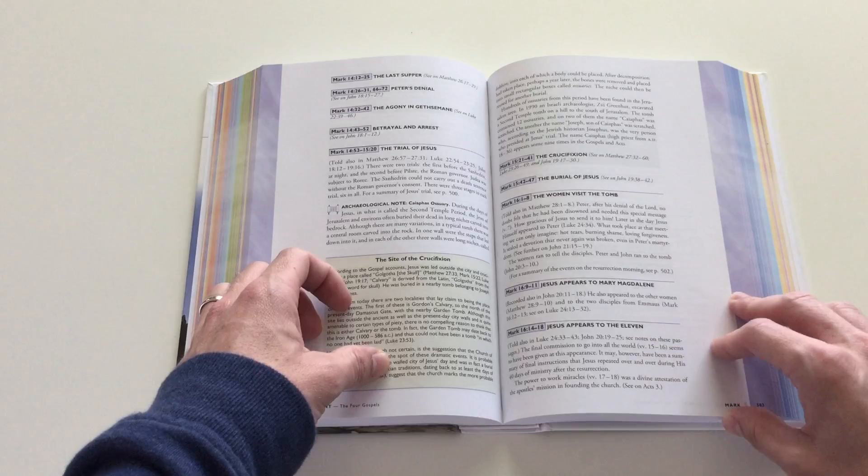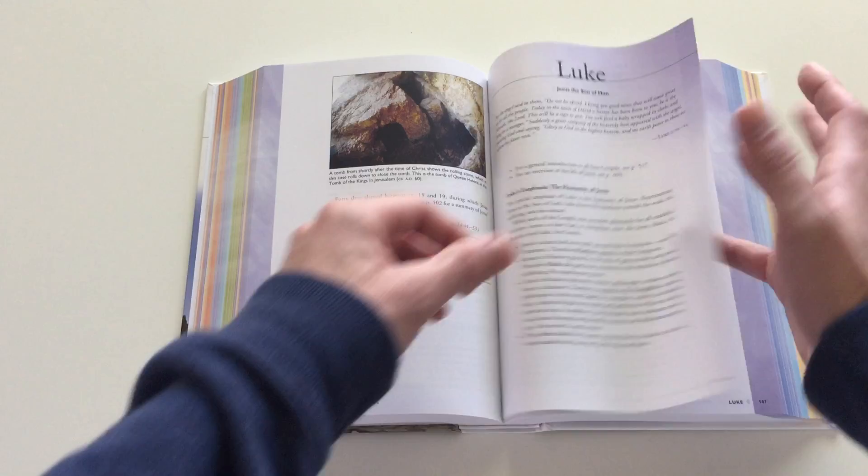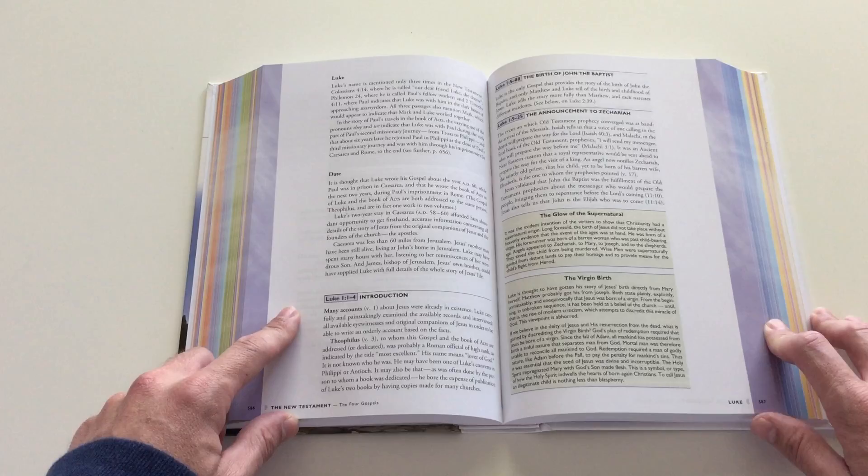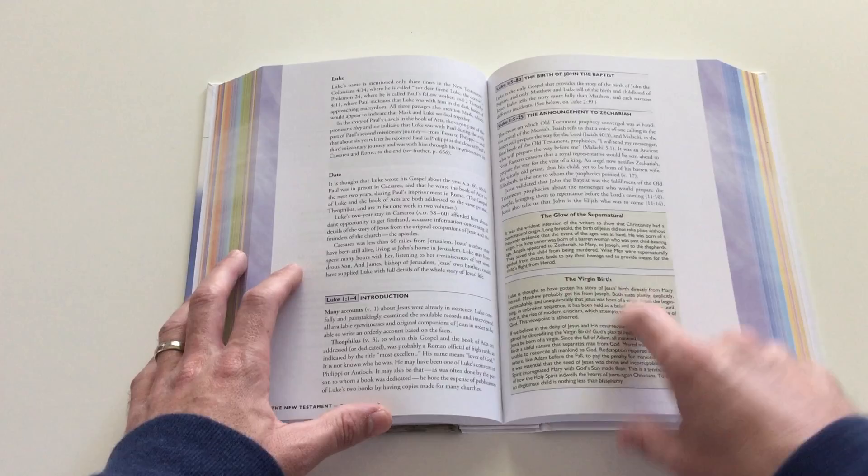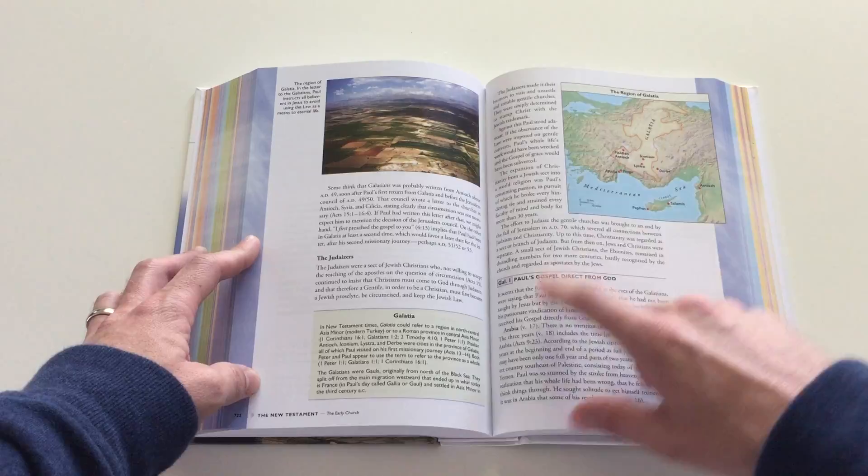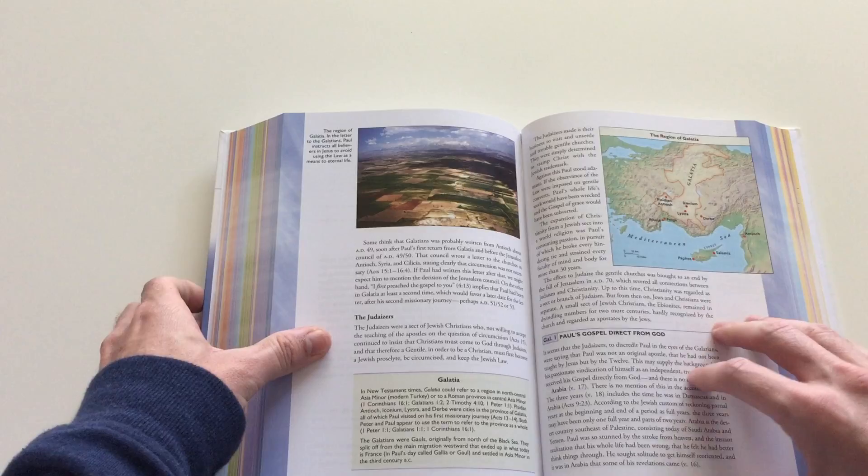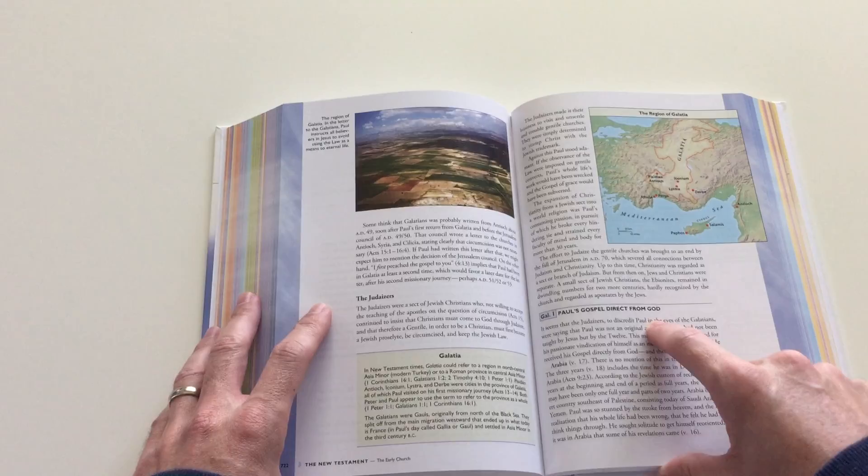Luke, every book has a short introduction. It's usually a very short introduction, but it's okay because he goes at length throughout the whole book in the content itself. Look, just about every other page. Look, the glow of the supernatural. He's going to tell you about the glow of the supernatural, the virgin birth. He's going to talk to you about the virgin birth. Bethlehem, amazing providences of God. Look at the pictures. Look at the maps, the region of Galatia. We're actually in the book of Galatians here and he talks about Galatians and doctrinal footnotes. He gives you a map of the region of Galatia. Galatians chapter one, Paul's gospel direct from God. And it goes into this whole spiel about it.